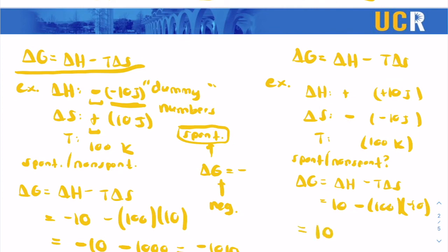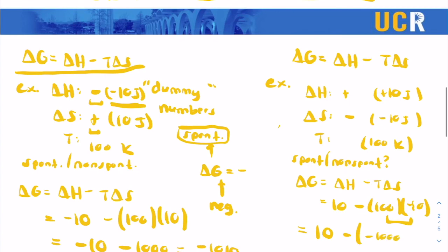So we have 10 minus, and then if you multiply these two numbers, you get a minus 1000. And you can see that you can change these signs. So this would be a positive value because it subtracts a negative sign. So that would be a positive 1010. So you can see that this number is positive. So since this value is positive, that means that the delta G is positive. So this reaction has to be non-spontaneous.